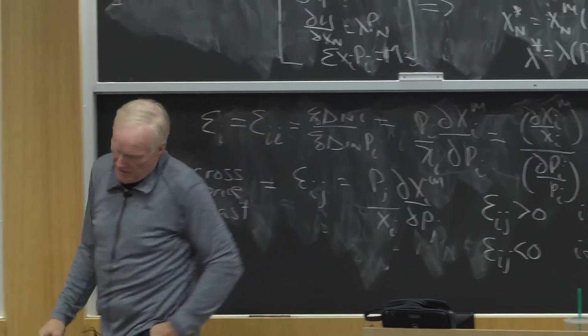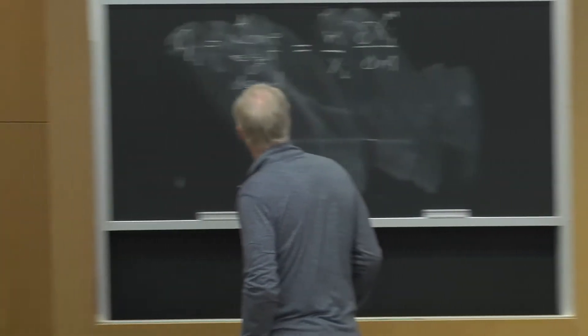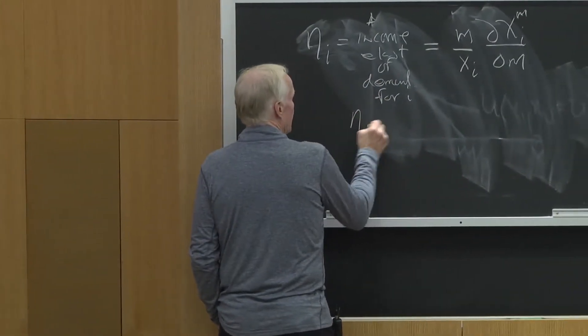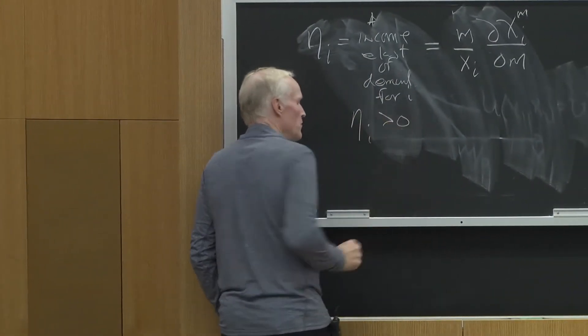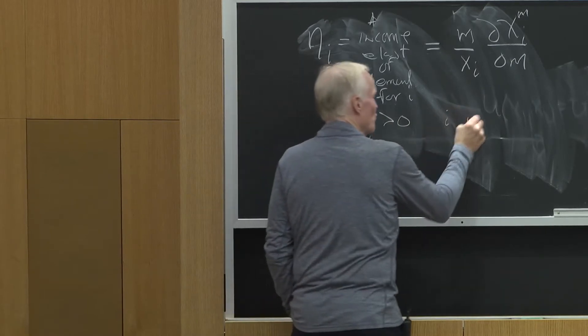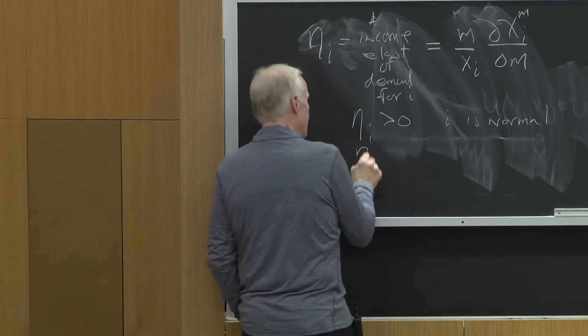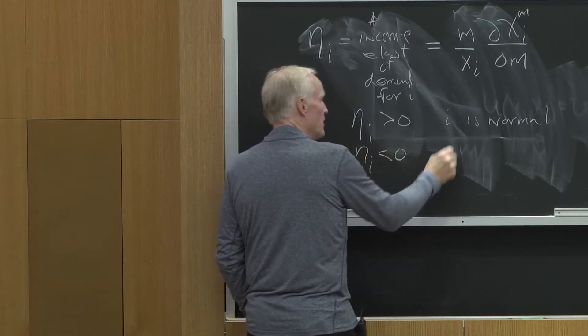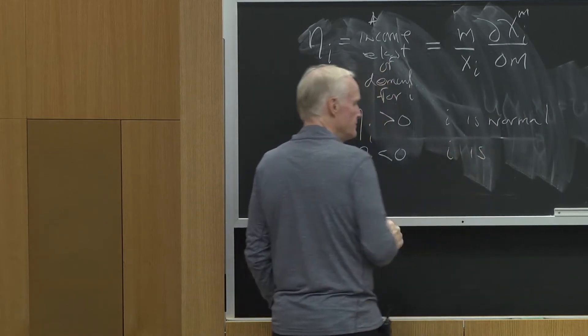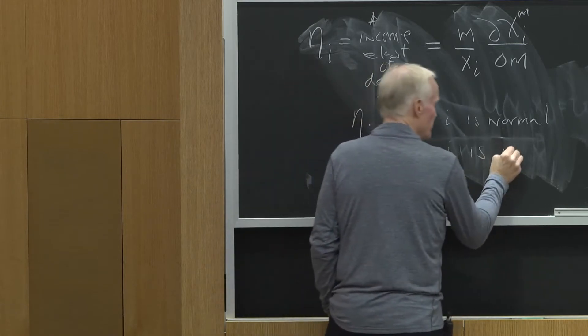Economists make a number of distinctions here. When a to i is greater than zero, we say i is normal. When a to i is less than zero, i is what? We call it inferior.